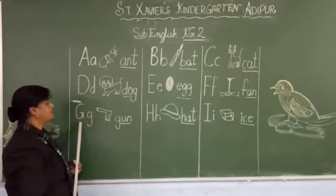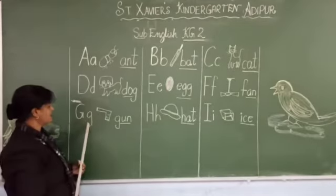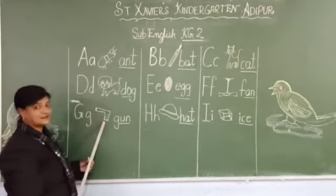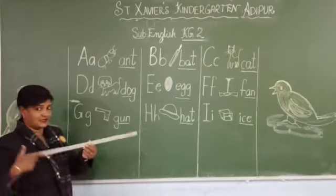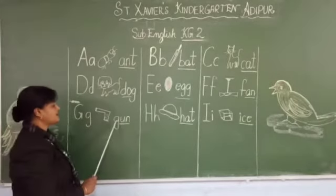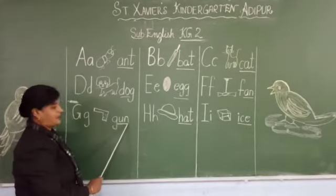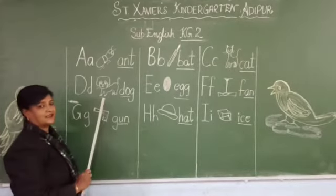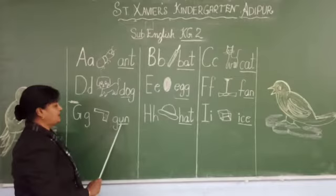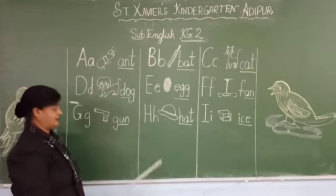After F comes G. Capital G, small g. G is for gun. This is a gun. The spelling of gun is G, U, N. Gun. Spell along with me: G, U, N. Gun.